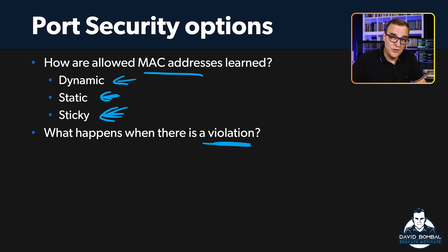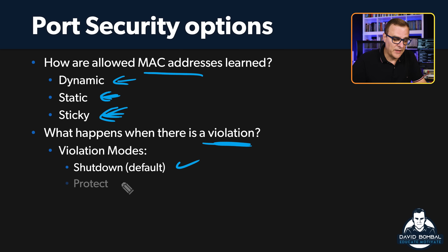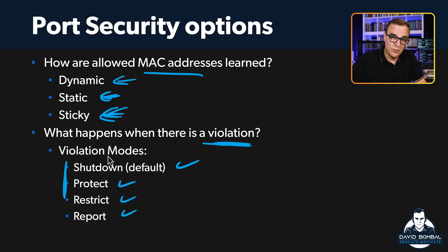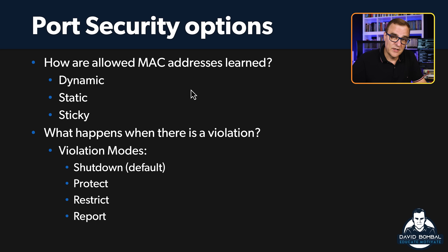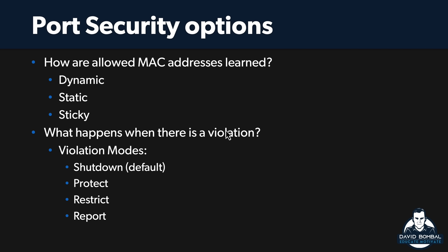You also need to understand violation modes. We have shutdown — which I've demonstrated — that's the default. We have protect, restrict, and report. These are the three we're going to concentrate on for the CCNA course. Shutdown shuts the port. Protect and restrict don't shut the port, but with protect we have no logging, whereas with restrict we get logging. Let's start with how MAC addresses are learned, and then we'll talk about violation options.